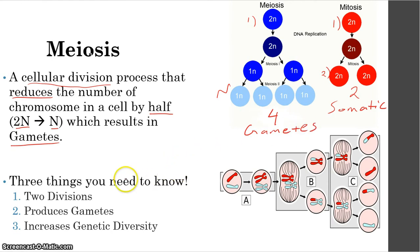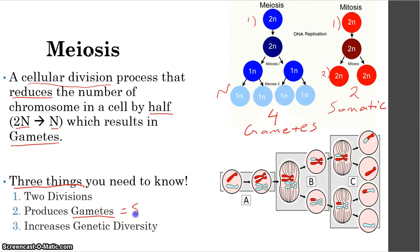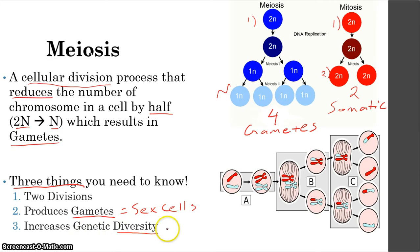Here are three things you need to know about meiosis. The first is that there are two divisions of the cells instead of just one. The second is that they produce gametes — remember, gametes are sex cells. And the third thing, which we'll cover in the next presentation, is that meiosis increases genetic diversity, meaning it helps us become more diverse as a species.